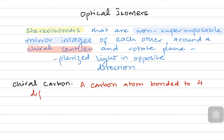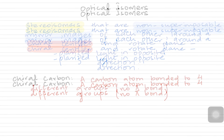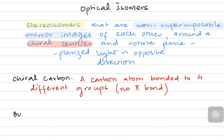They can be any kind of atom or molecule, but they have to be four different groups. A chiral carbon never makes a pi bond — pi bond means double bond — so a chiral carbon never makes a double bond.